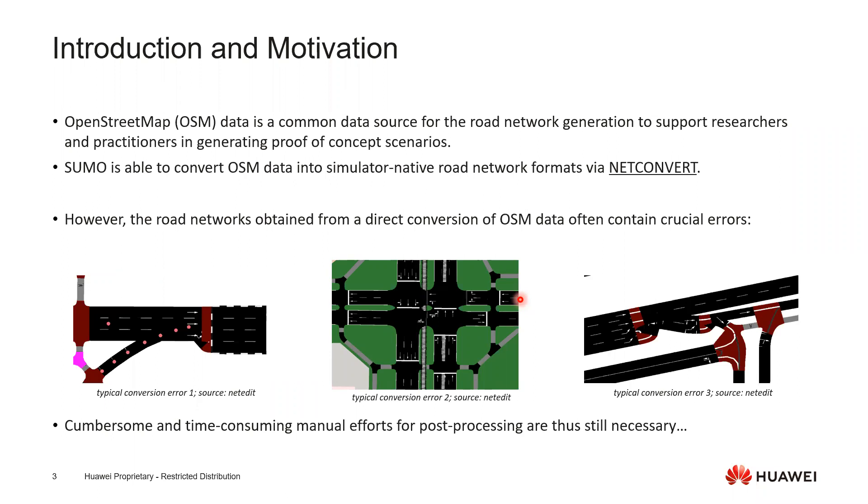However, you can see that if we directly use OpenStreetMap data and fit it into networks, those are the common errors that we can find in the resulted roadmap. There are disconnections or very not easily understandable lane connections. Therefore, when we obtain those kind of results, usually we need to take much more manual efforts for post-processing.